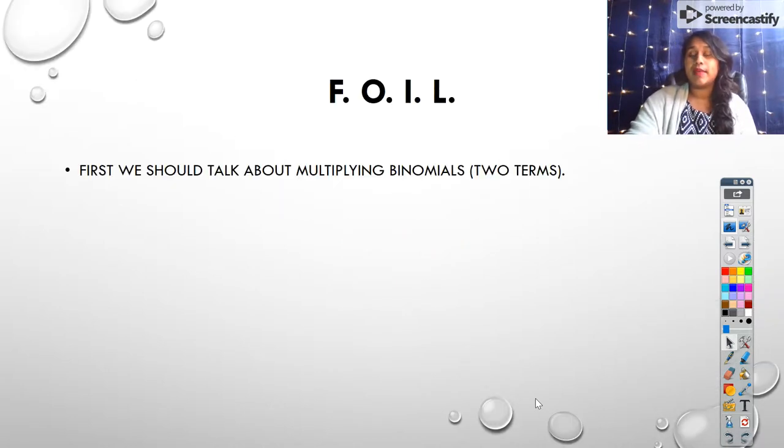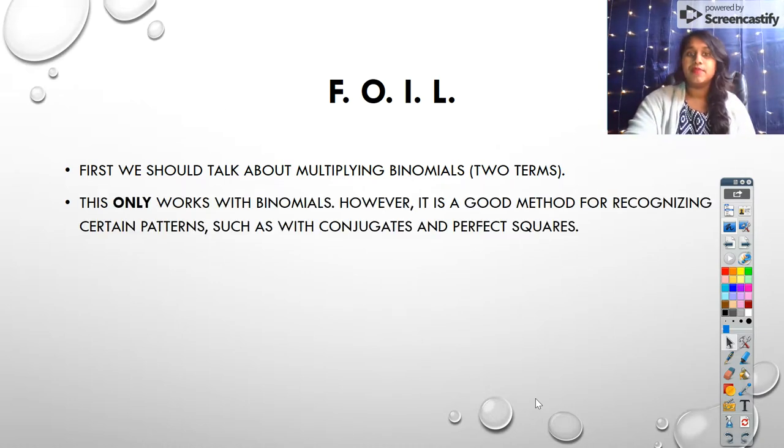First, multiplying polynomials. We're going to talk about multiplying binomials. What is a binomial? A binomial has two terms, something plus something or something minus something. We can only use the FOIL method when we talk about binomials. This isn't a good method for trinomials or polynomials with four terms or higher.